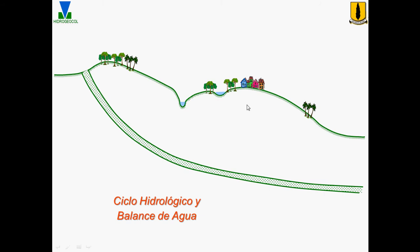This lecture is on the effect of climate change in coastal aquifers. Let's begin with the water cycle, which can be a schematic view of a real-world watershed.